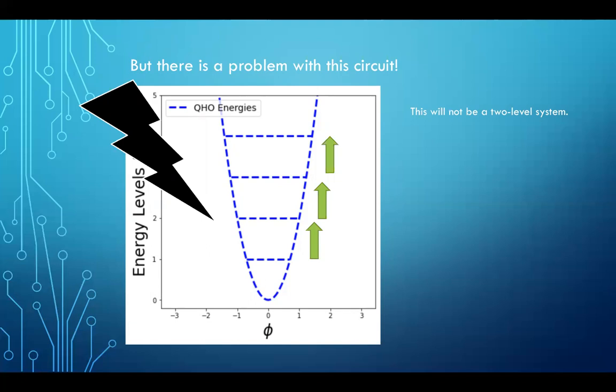So this will not be a two-level system. Once we shine light on it, this circuit could be in the ground state, first excited state, second excited state, third excited state, and so forth. This is not a two-level system. So no good.